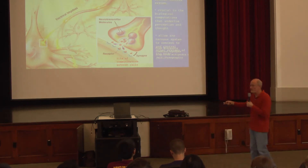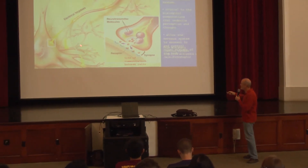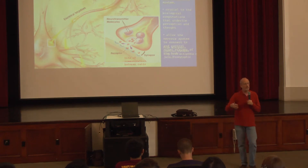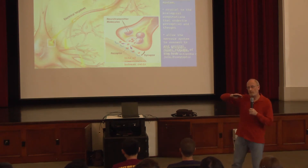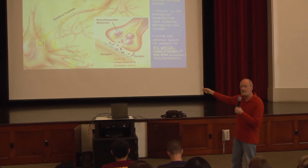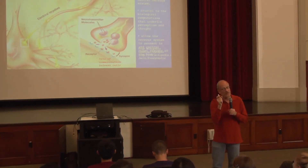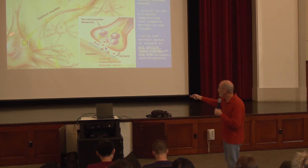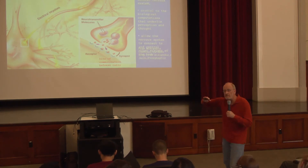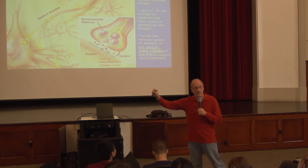The dendrites and cell body form the analog region of the cell — there's a resting membrane potential that you can vary a little bit depending on input. Then the trigger zone at the beginning of the axon is where it's determined whether or not you get an action potential. That's where you go from analog, continuously varying potential, to digital — action potential or no action potential.